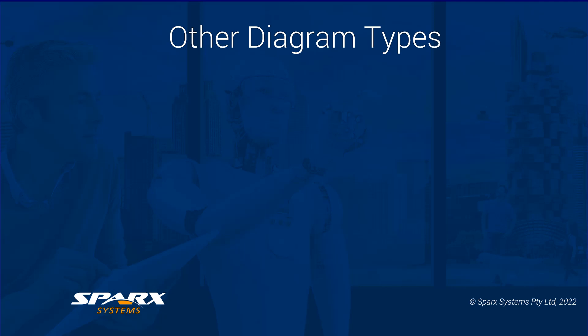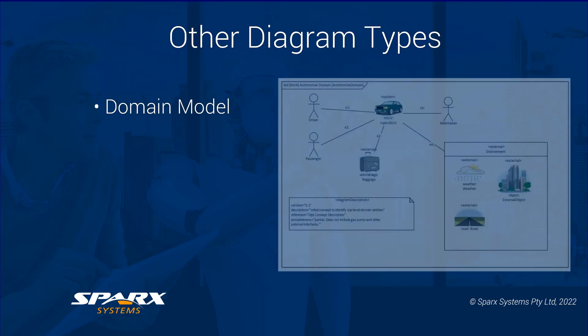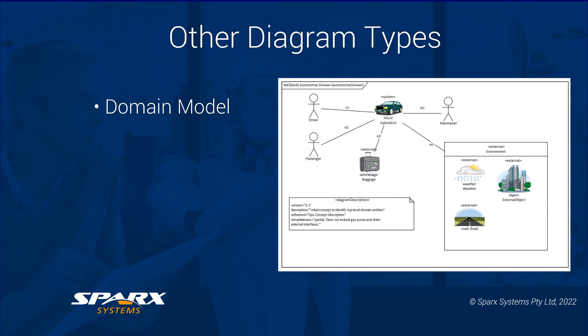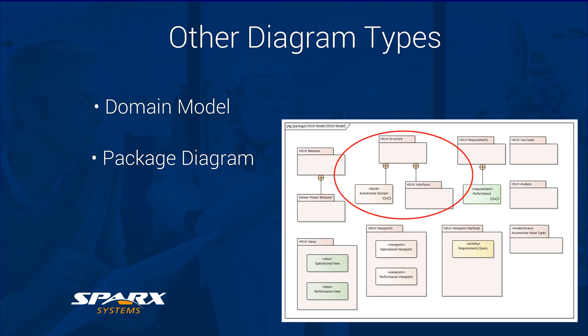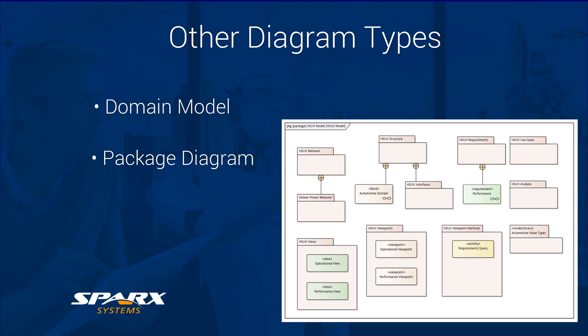Although we have covered some of the key diagram types based around the four pillars, there are other key overview diagrams like the domain model and the package diagram. The domain model clarifies the domain in which the model is working, defining a boundary to ensure there is no scope creep, ensuring external features are not included in the project. With the package diagram, the main elements shown are the set of core packages that represent a summary of the complete model — in this case including the requirements package, the root of the structural package tree, and the behavioural model package tree. This usually includes a model library of commonly used objects, such as definitions and the value types, as outlined earlier.